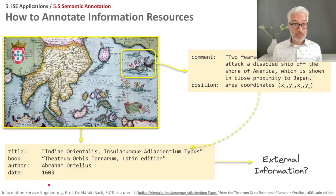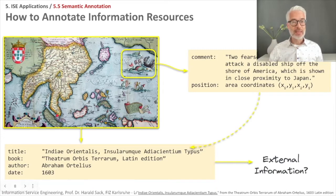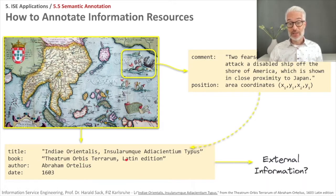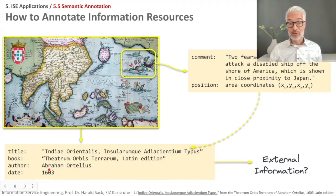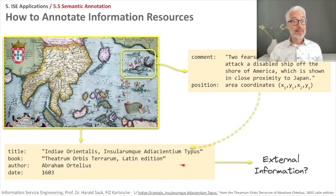We have to put this information to this part of the image, and this we do by a so-called semantic annotation. Our map can be annotated with a title — in Latin, 'India Orientalis Insularumque Adiacentum Typus' — from the book 'Theatrum Orbis Terrarum,' the first atlas of the world, issued by Abraham Ortelius, a Brabantian cartographer, in 1603. This would be metadata for our map.